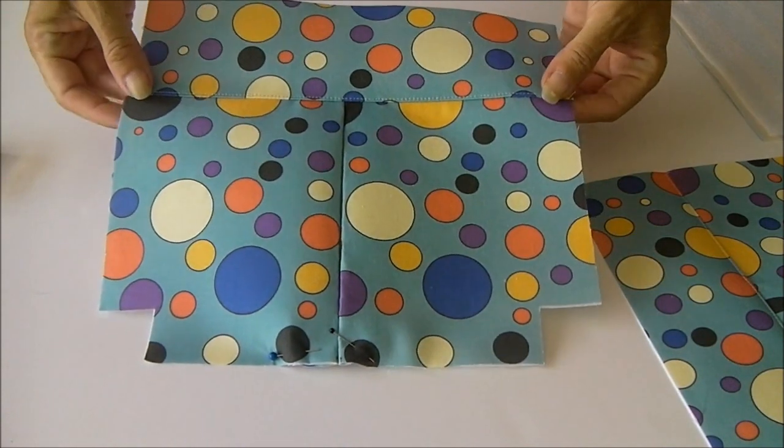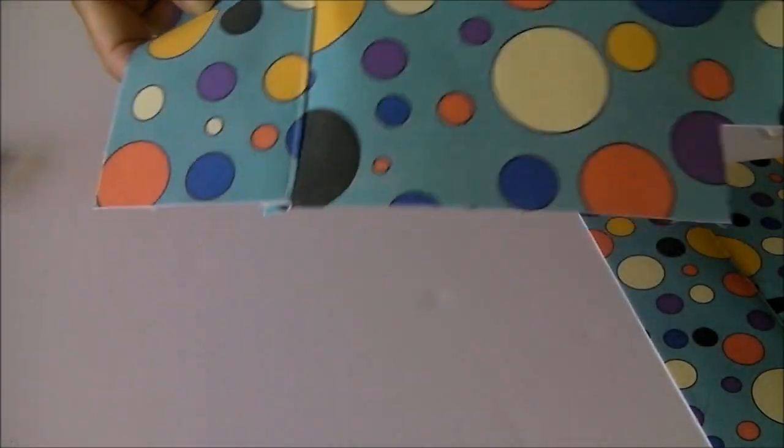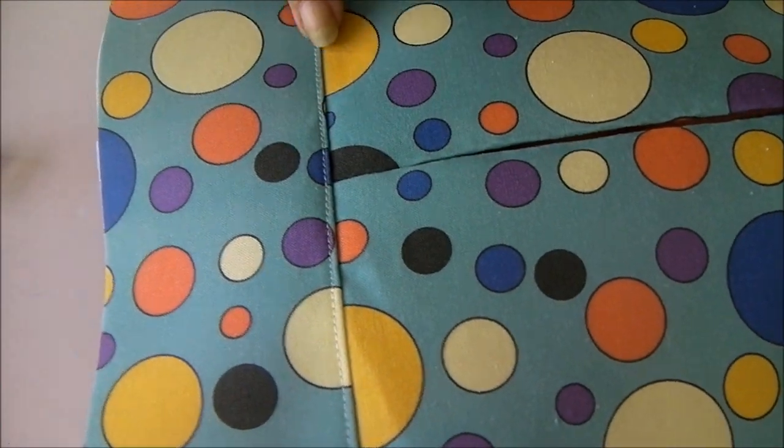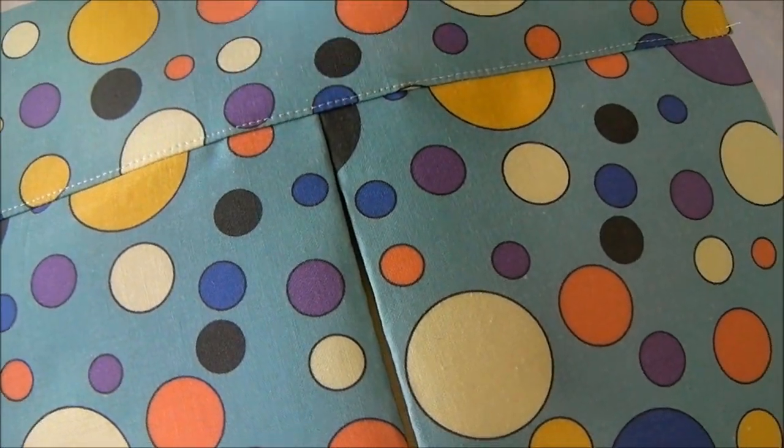My outside panel for the bag is now completed. Once I'd sewn the top on, I just folded the seam allowance upwards and completed a line of top stitching. You can see that along this part of the bag just here. And now it's time for us to add in our zip.